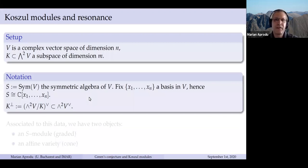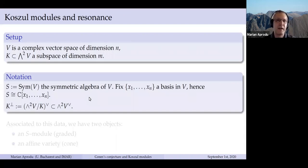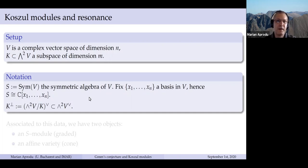Let me start with Koszul modules and resonance. These are very simple objects, actually, that originated in topology and geometric group theory. For the definition, you need very little — you just need a vector space. For simplicity, I will place myself over complex numbers, but basically everything works over any field or algebraically closed field. And you need a subspace in the second exterior power. That's just the setup.